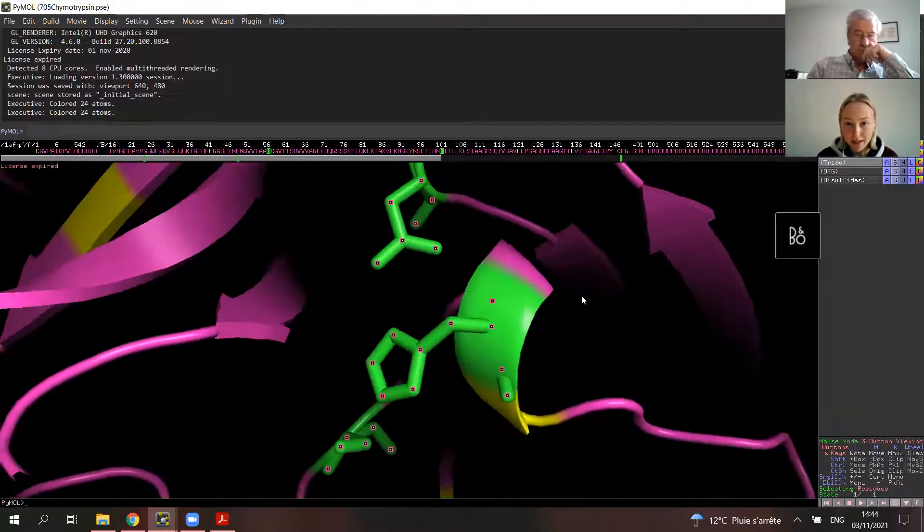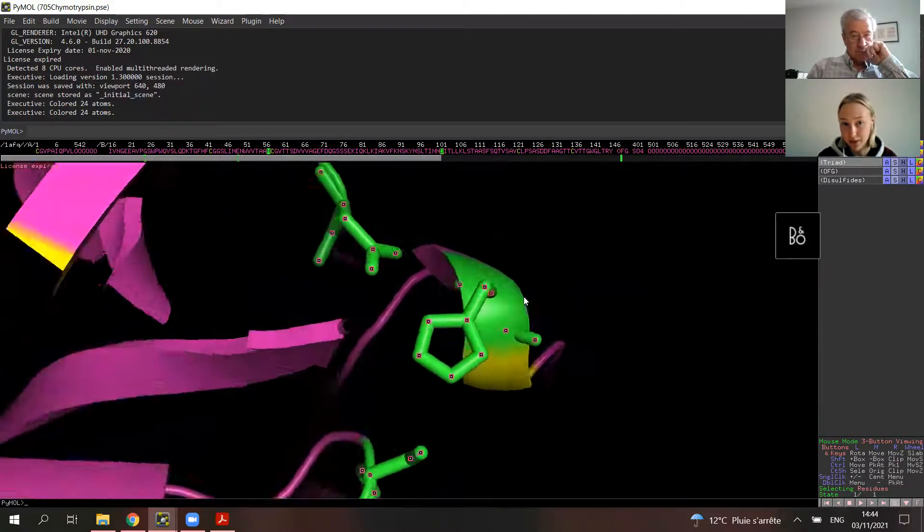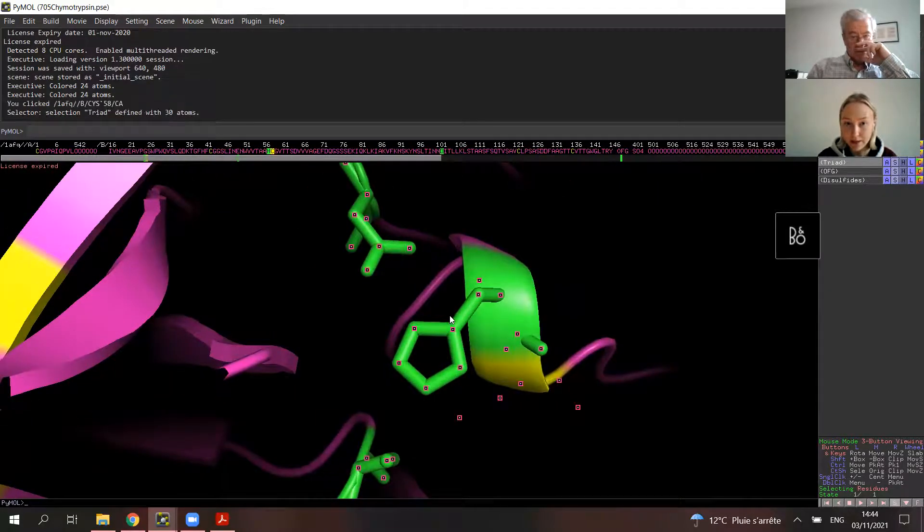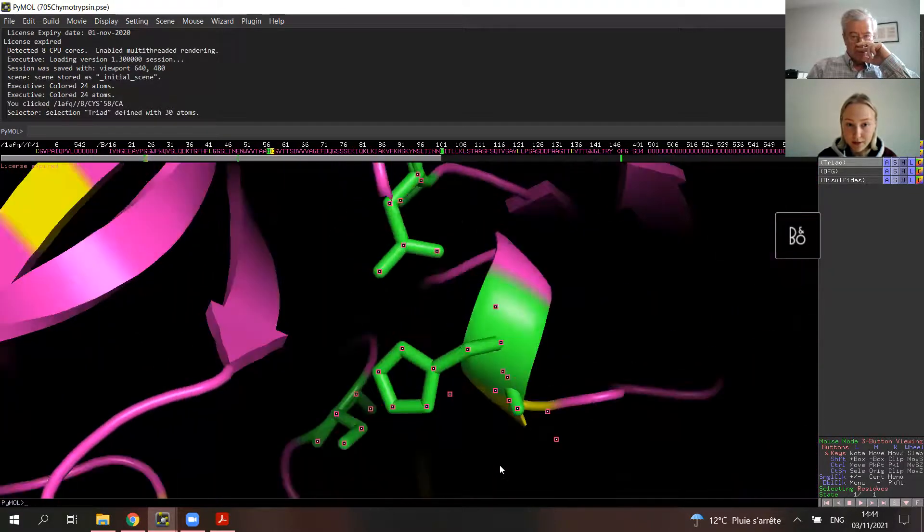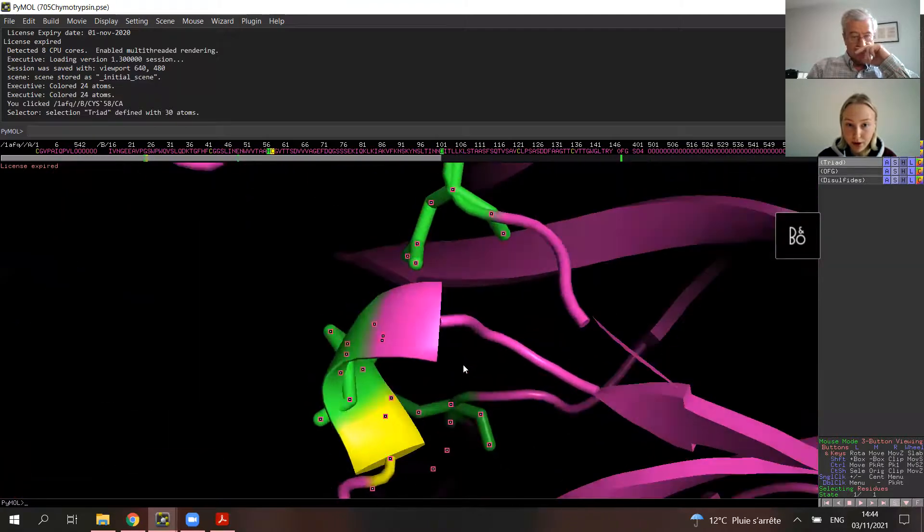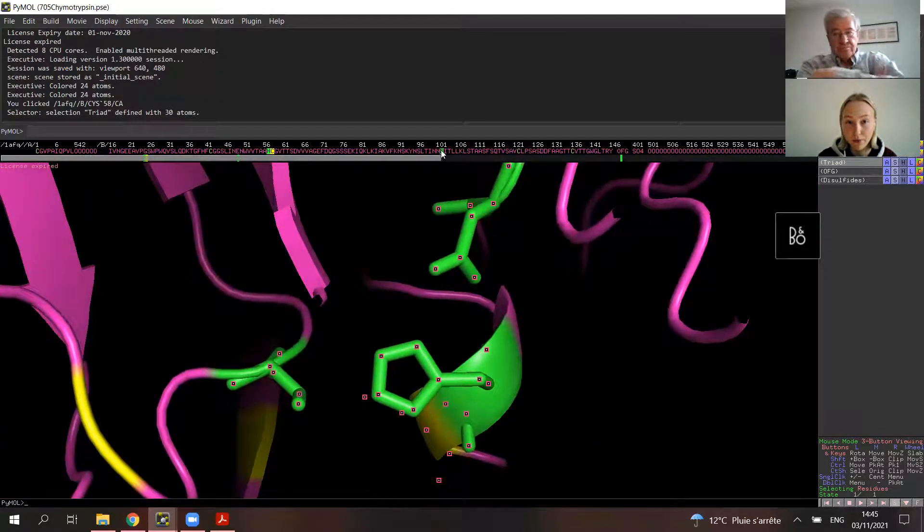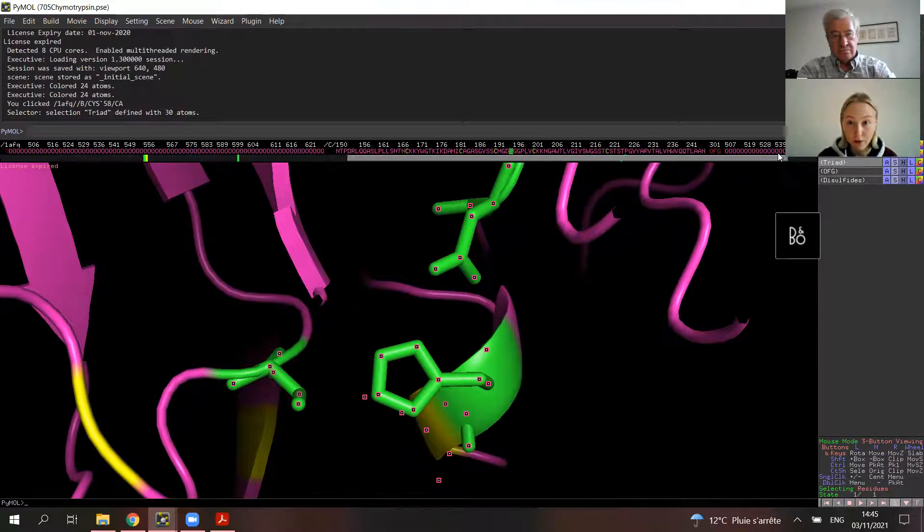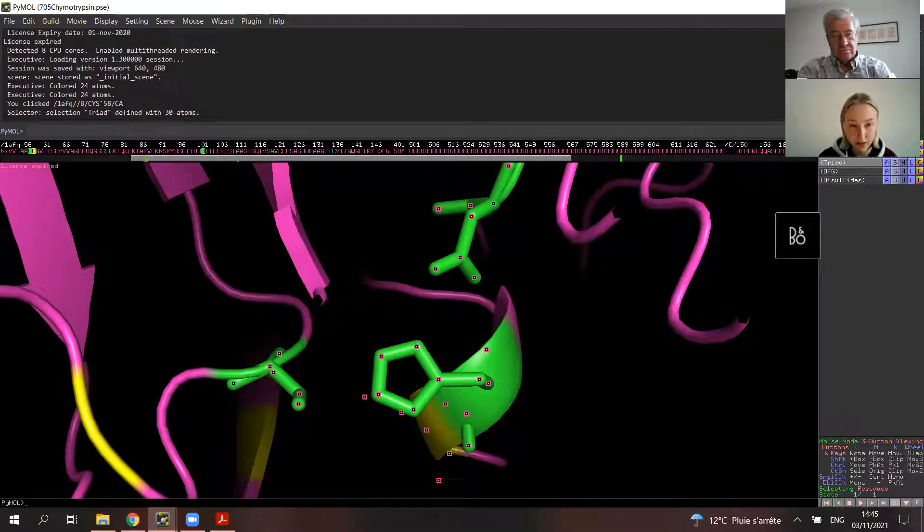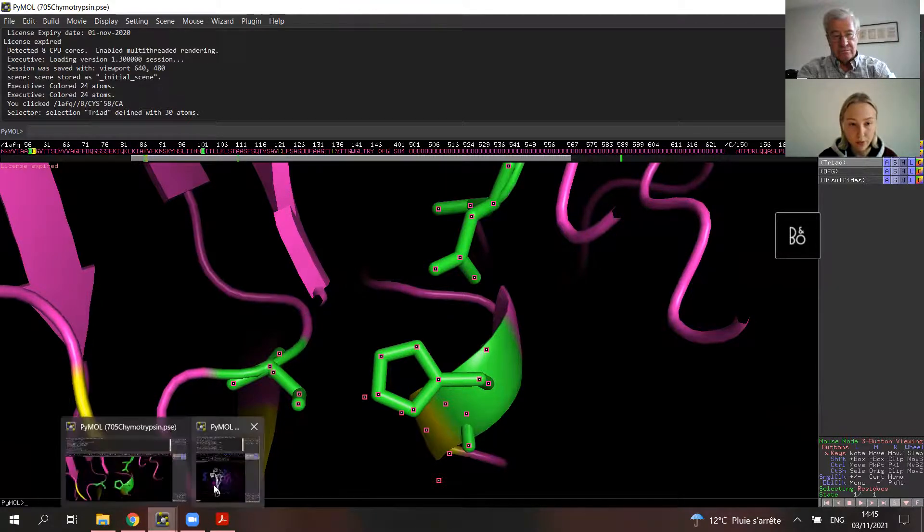So, we basically can see what I showed you at the slide, but in 3D. Those residues, they are present here and they are pointing to each other. And also, we can see that selection of triad. It's highlighted in the sequence of the protein.